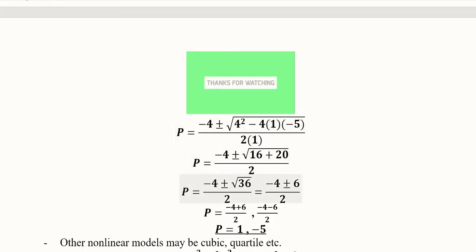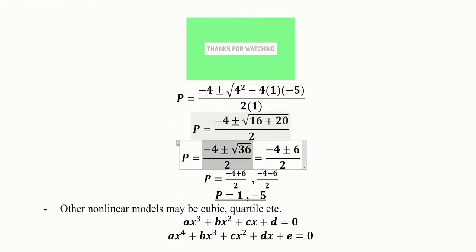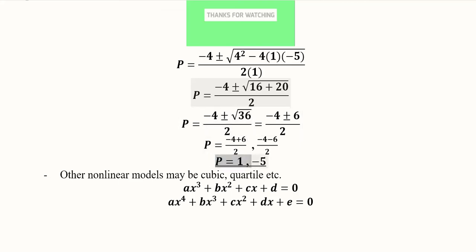So putting these values, we will get the value of price, which is not a unique value. It is basically a couple of values, and here we are 1 and minus 5. So minus 5 doesn't seem to be any logical price, so we continue with P is equal to 1.